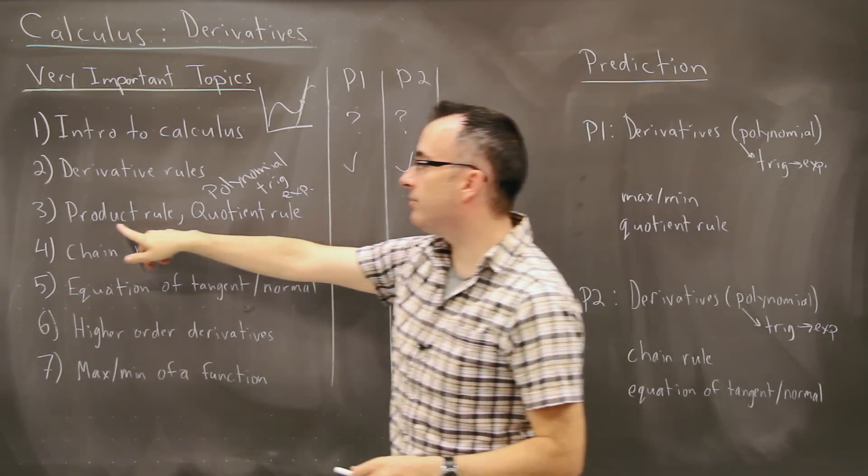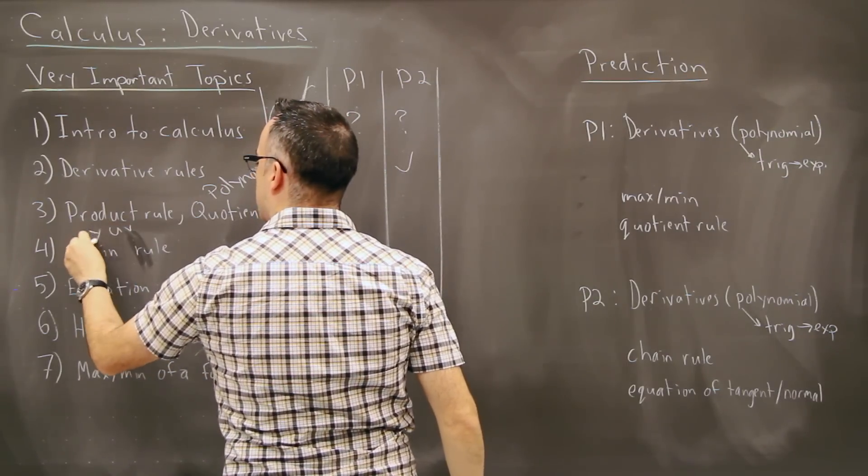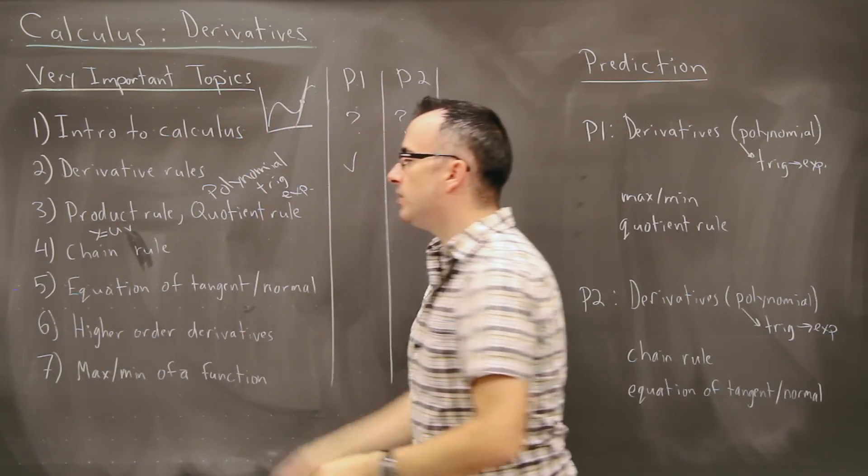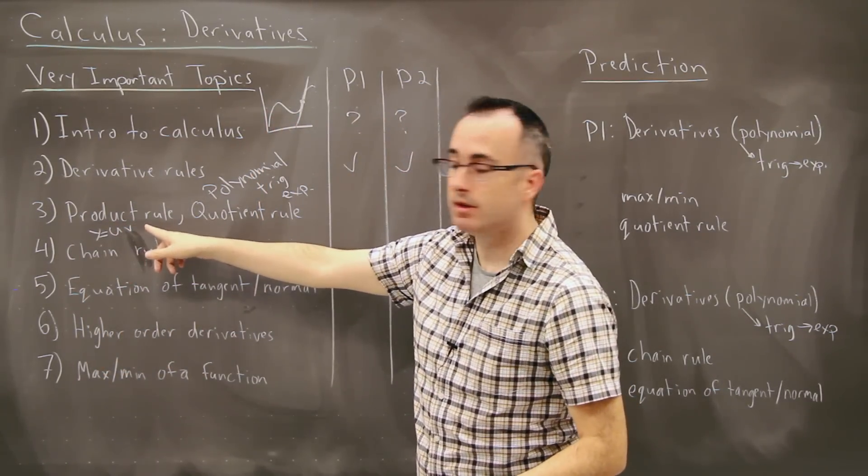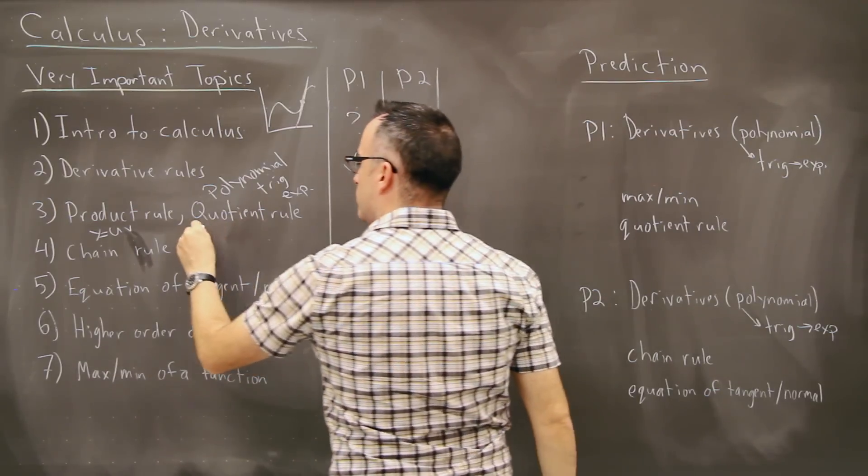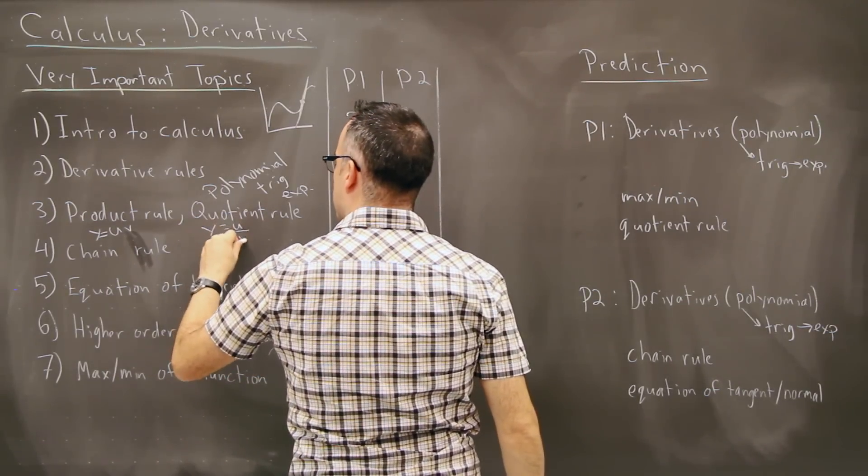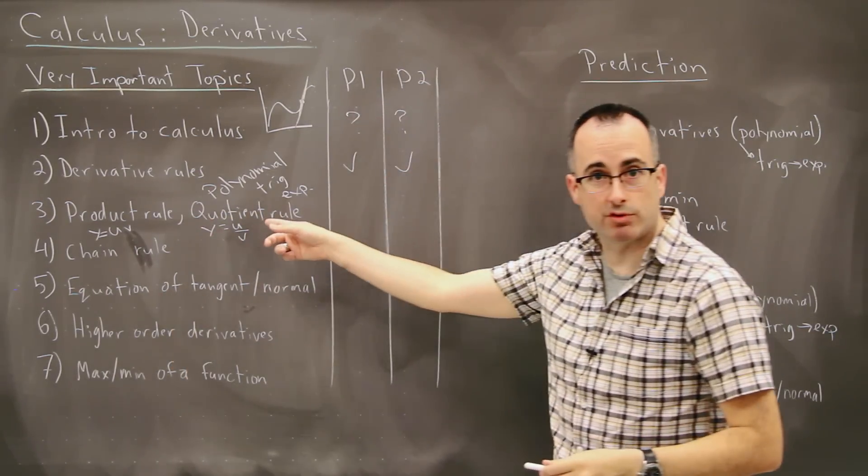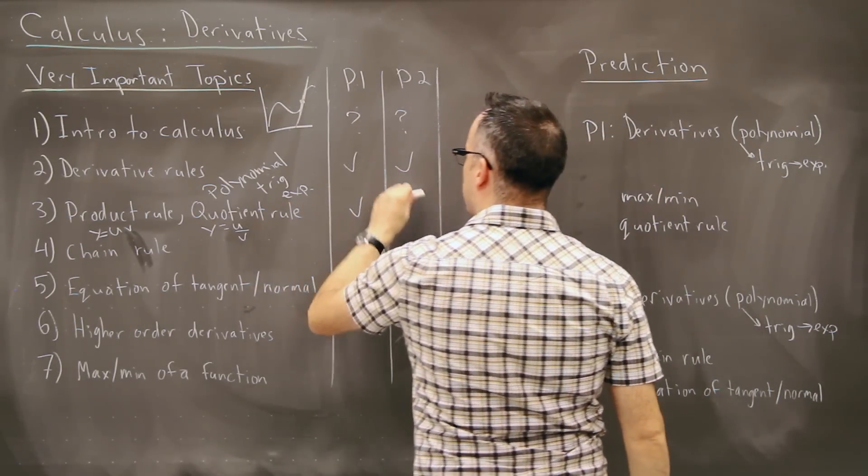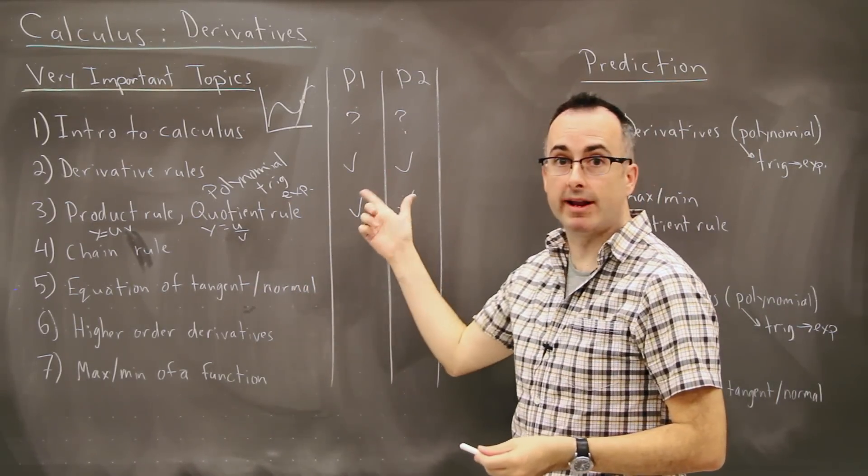Then we have, what if we have two equations times each other? We call this the product rule. So we have two equations, like one is u, one is v. Then we have this product rule. And we have two equations divided by each other, two functions, u over v. It's called the quotient rule. And those show up pretty evenly weighted from paper one and two.